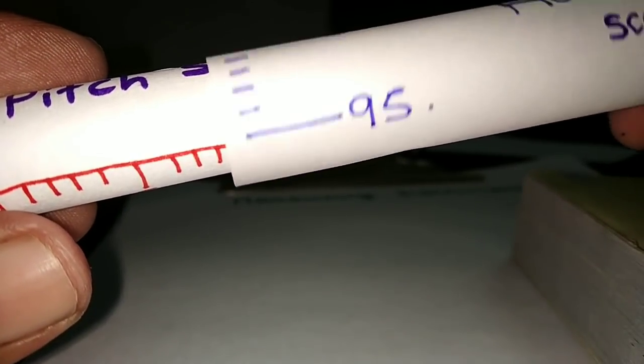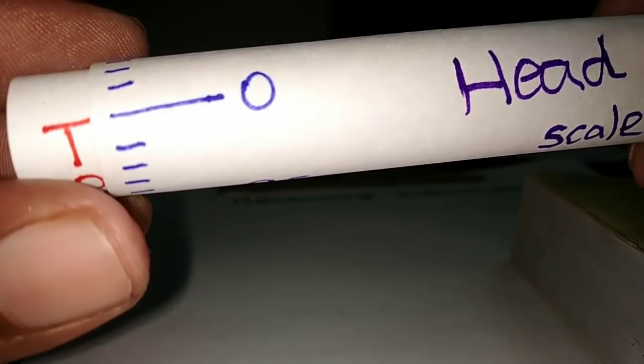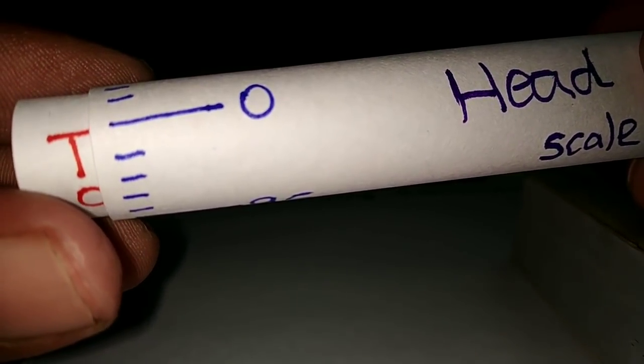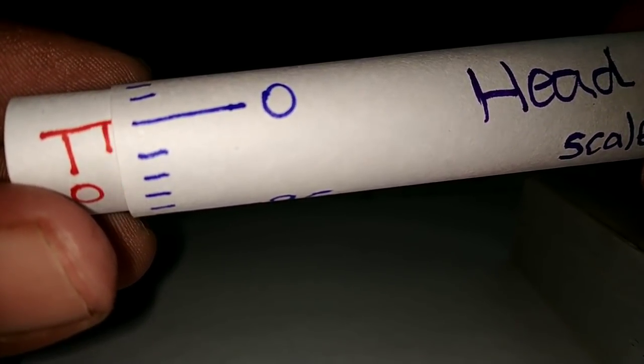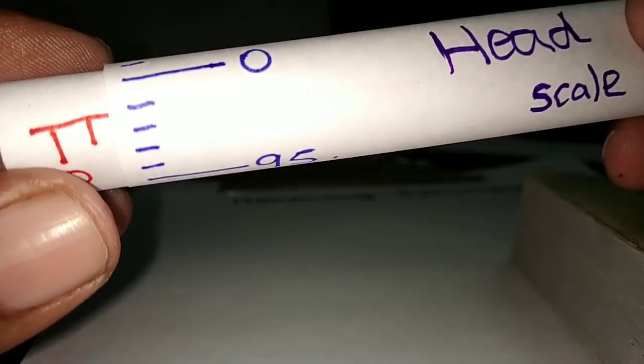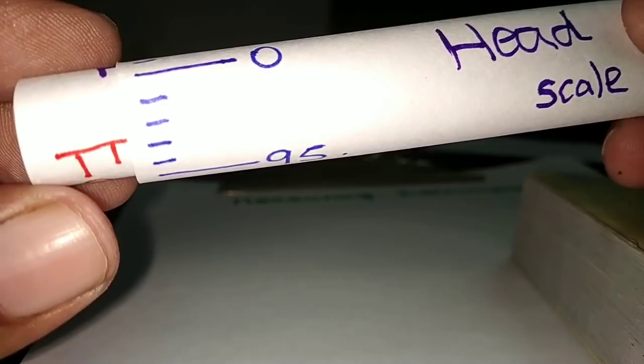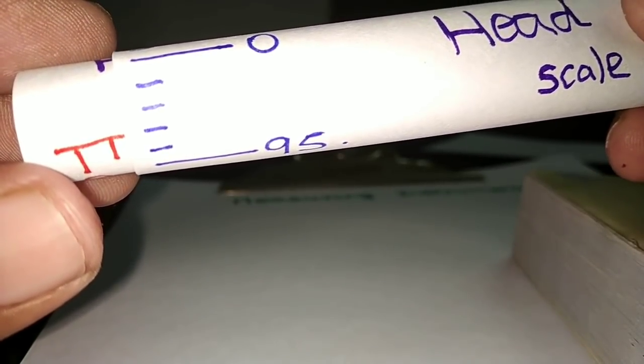Let's rotate the head scale and talk about screw gauge zero error. Let's say 0 and 0 coincide — that means no zero error. Suppose we have a case where we can't change everything. Let's say head scale 0 and 0 — that gives positive zero error, and the correction is negative. Suppose this head scale equals 0, and pitch scale equals 0 — that is negative zero error.